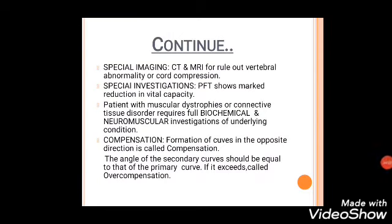Special imaging for scoliosis includes CT and MRI to rule out vertebral abnormality or cord compression. Pulmonary function tests show marked reduction in vital capacity. Patients with muscular dystrophies or connective tissue disorders require full biochemical or neuromuscular investigations. The formation of curves in the opposite direction is called compensation; the angle of the secondary curve should equal that of the primary curve. If the secondary curve exceeds the primary, it is called overcompensation.